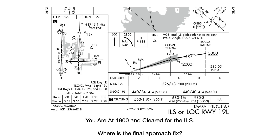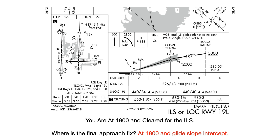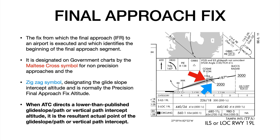Let's look at another example. Say you're on the ILS or Localizer 19 left and you're at 1,800 feet — ATC has been vectoring you at 1,800 feet, then you're cleared for the approach. Where is the Final Approach Fix? You guessed it right: 1,800 feet and glide slope intercept. Remember, the Final Approach Fix is when ATC directs a lower-than-published glide slope or path or vertical path intercept altitude — the result is the actual point of the glide slope or path or vertical path intercept. So that is the actual glide slope intercept, which was 1,800 feet.